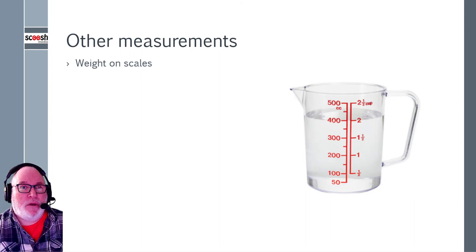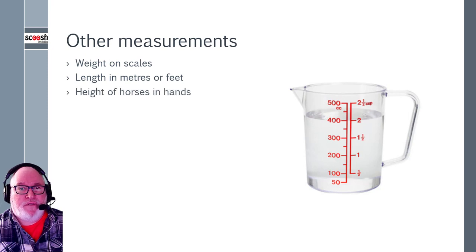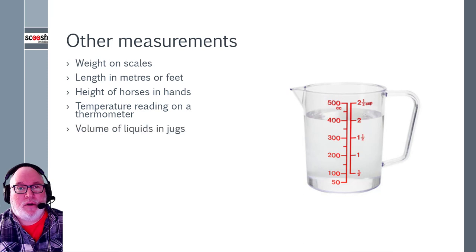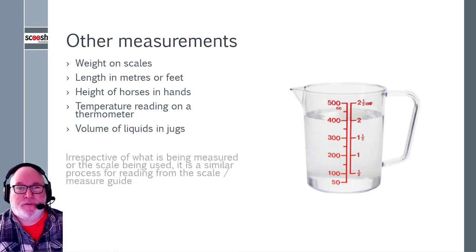So other measurements that we don't think about, but we maybe do on a regular basis. You stand on the scales that we weigh, or you weigh something on the kitchen scales. Length in meters or feet, with a bigger measurement. So a tape measure, for example. Height of horses and hands. Not many people do that, but it's still measured in hands and part thereof. Temps you're reading on the thermometer. Sometimes you look at a thermometer. Also volume of liquids in jugs. So in the kitchen or measuring something out.